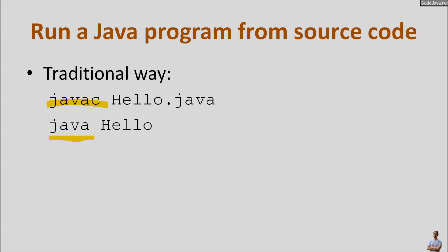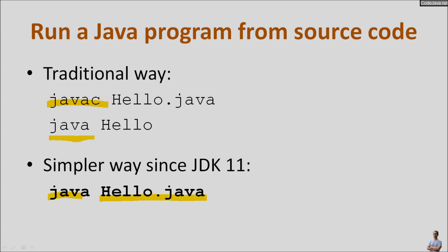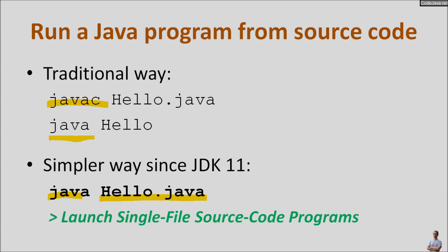The traditional two-step way of running a Java program that has only a single source file is somewhat verbose and unnecessary. So since JDK 11, there's a much simpler way to run a Java program contained in a single source file using the Java command, followed by the name of the Java source file. This feature is called 'launch single source code programs,' available in Java 11, and it helps learning Java programming easily.